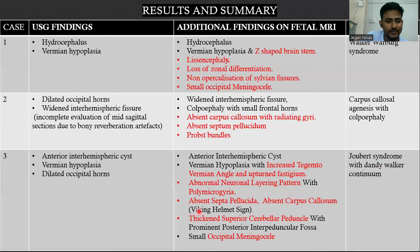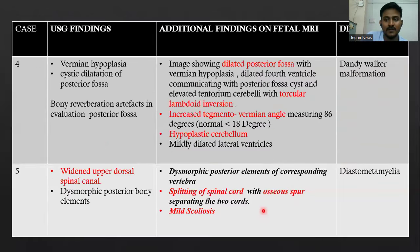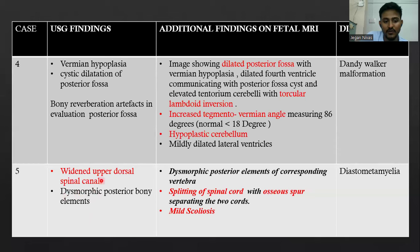Case three, Joubert syndrome: in addition to widened interhemispheric fissure, vermian hypoplasia, and dilated occipital horns on USG, MRI revealed abnormal neuronal layering pattern, polymicrogyria, absent septum pellucidum, absent corpus callosum, abnormal peduncle angle, and occipital meningocele. Case four, Dandy-Walker malformation: in addition to vermian hypoplasia on USG, MRI revealed torcular-lambda inversion, increased tegmental vermian angle, and hypoplastic cerebellum. Case five, diastematomyelia: USG showed widened dorsal cervical spinal canal with dysmorphic posterior elements, and MRI added the finding of splitting of the spinal cord with osseous spur and mild scoliosis.